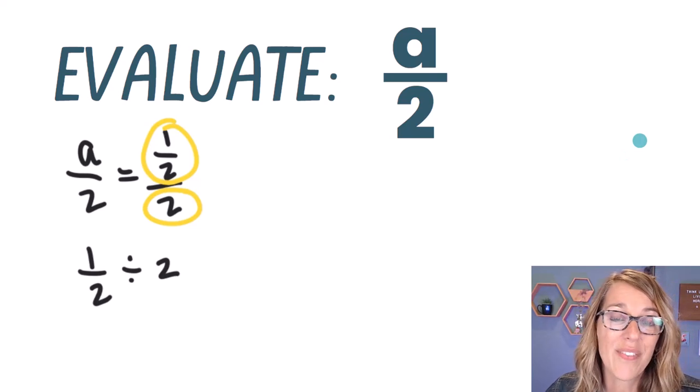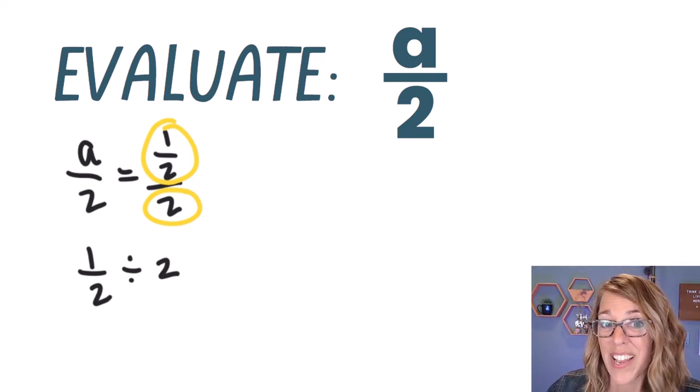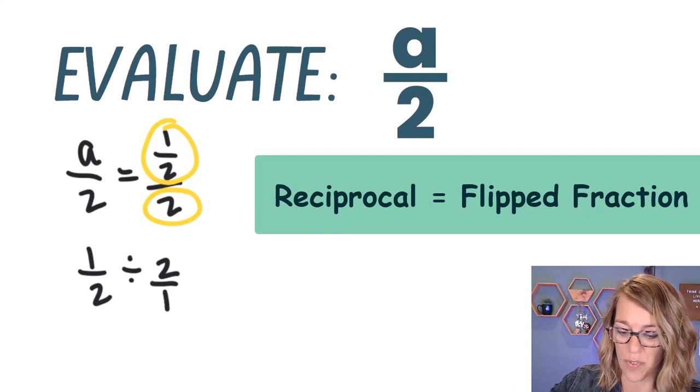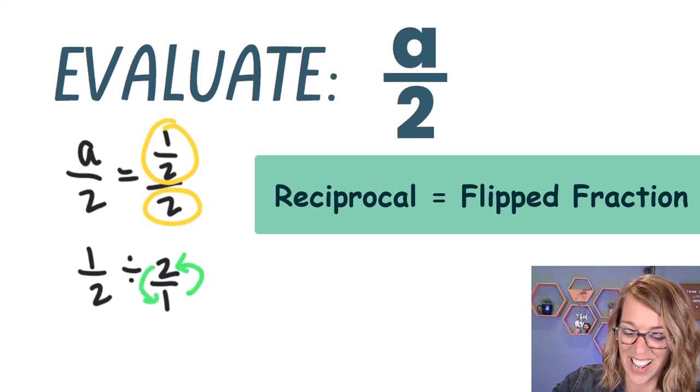But instead of dividing, I can multiply by its reciprocal. So I'm going to think of this as two, or two over one. Let's go ahead and take the reciprocal of this second fraction. As I do that, I get really close to my answer.